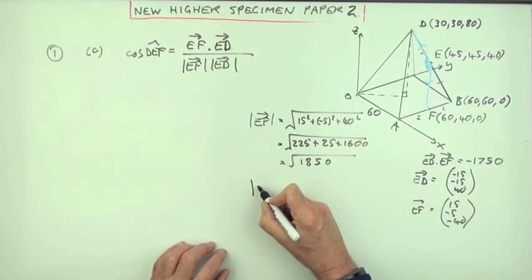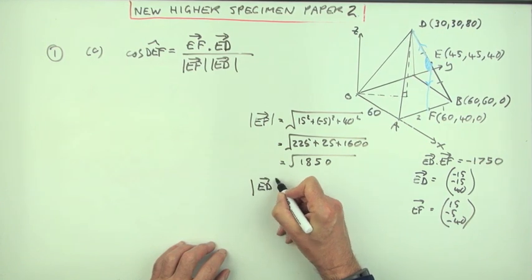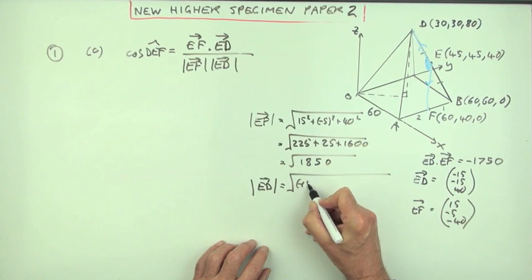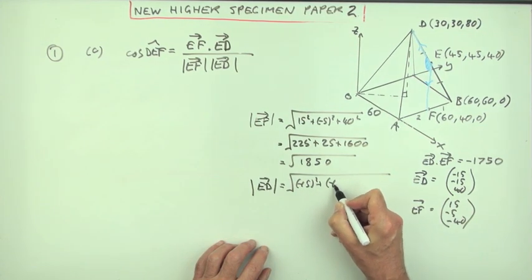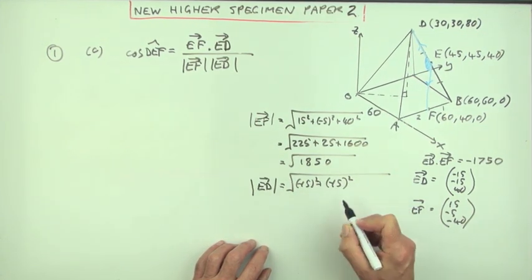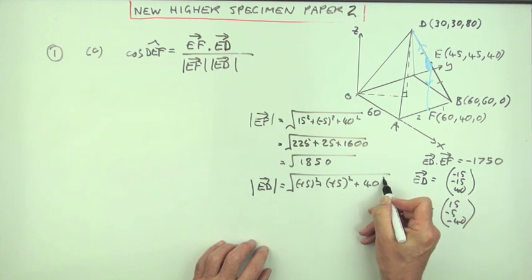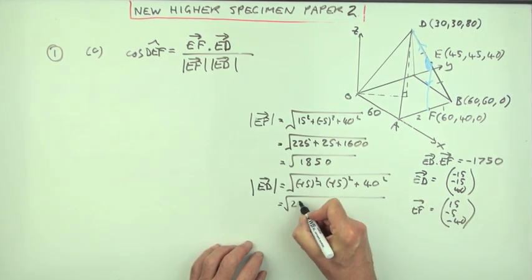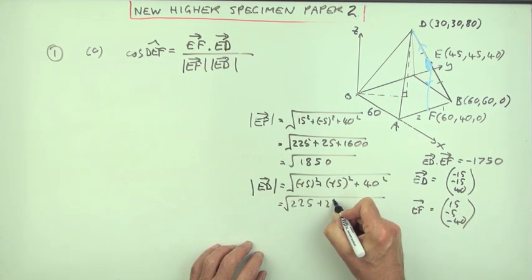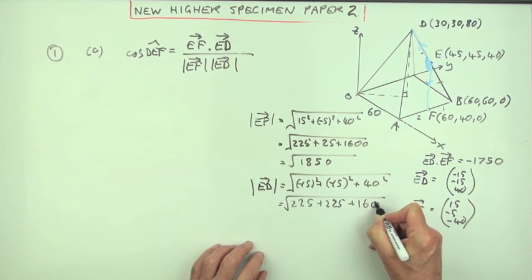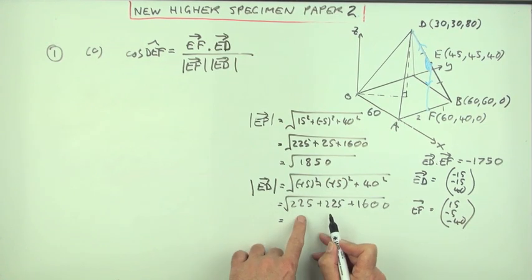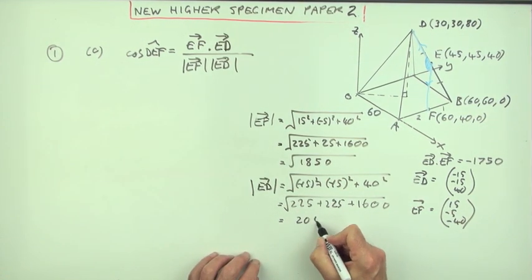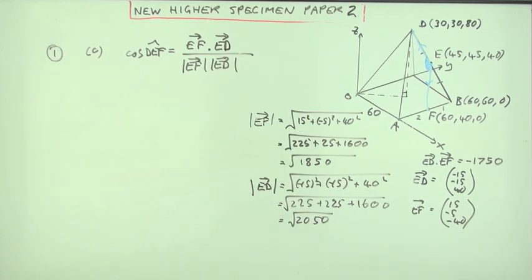Ridiculous numbers. And what about ED? Same thing, the square root of the components. Now ED was negative 15 squared. Not that the negatives matter, particularly negative 15 squared and 40 squared, because when you square it, it's going to be positive. So there's a 225, and another 225, and another 1600. So that'll be 450, and 16 is 2050. The square root of 2050.